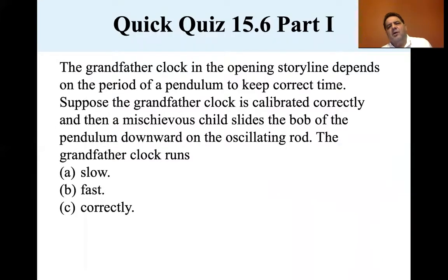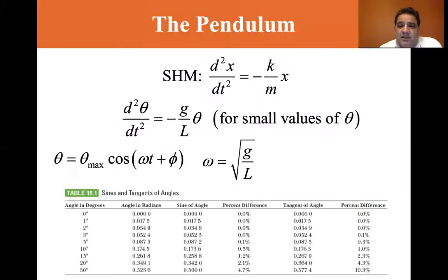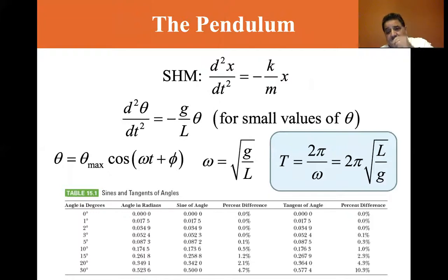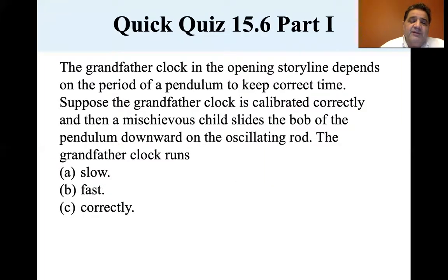So a grandfather clock in the opening story depends on the period of a pendulum to keep correct time. Suppose the grandfather clock is calibrated correctly, and then a mischievous child slides the bob of the pendulum downward on the oscillating rod. Does the grandfather clock run slow, fast, or correctly? Well, let's look at the period is equal to 2π square root of L/g. So if L increases, even though it's the square root of it, if L increases, the period is going to increase, and if the period increases, then it's going to run slower.